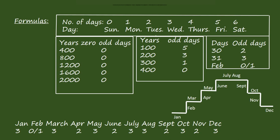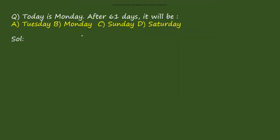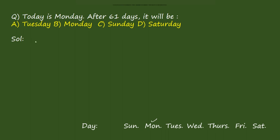Problem 1: Today is Monday; after 61 days it will be which day? We divide 61 by 7: 7×8 = 56, remainder 5 — so 5 odd days. Starting from Monday, counting 5 days forward: Tuesday, Wednesday, Thursday, Friday, Saturday. The answer is Saturday — option D.